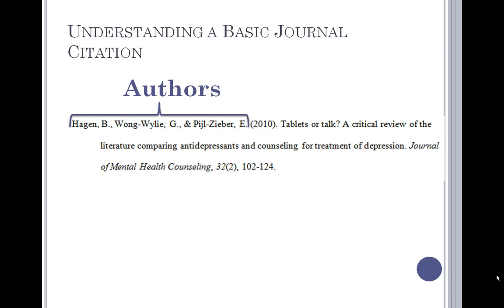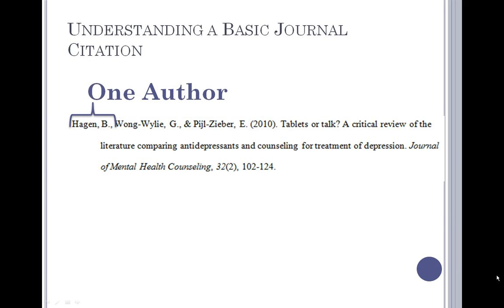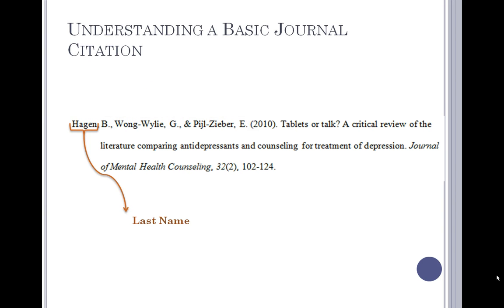The first element is the listing of authors, which is listed in the same order as they appear in the article. Each author is listed by their last name followed by a comma and their first initial, as well as the middle initial if given.